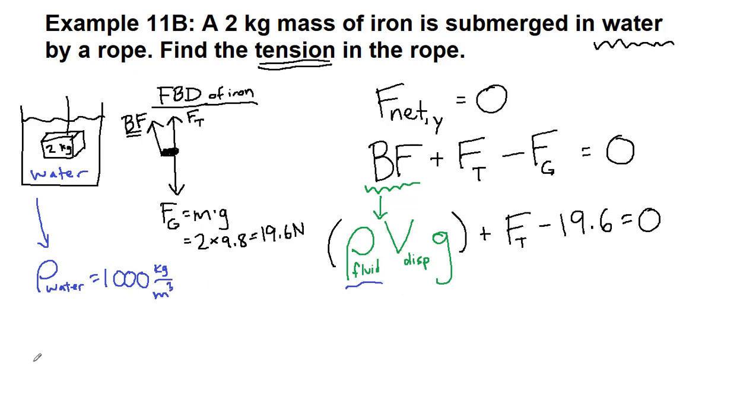The volume displaced, the volume of iron, is something that we aren't given, however, we do know that the density of iron, by definition, is the mass of the chunk that we're looking at, which we do have, divided by the volume of the iron,